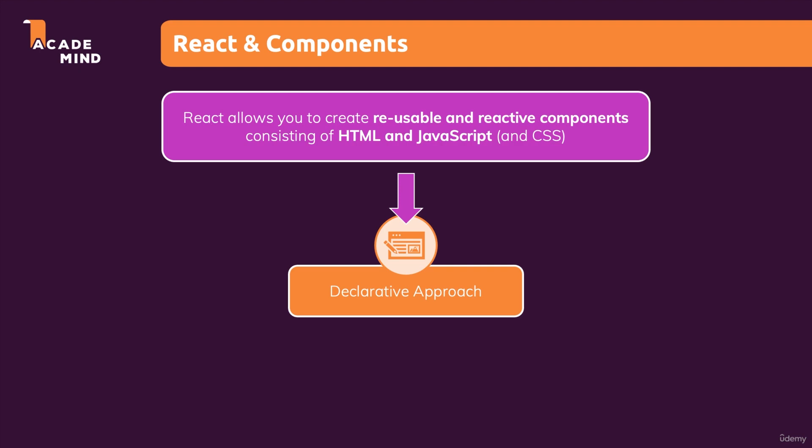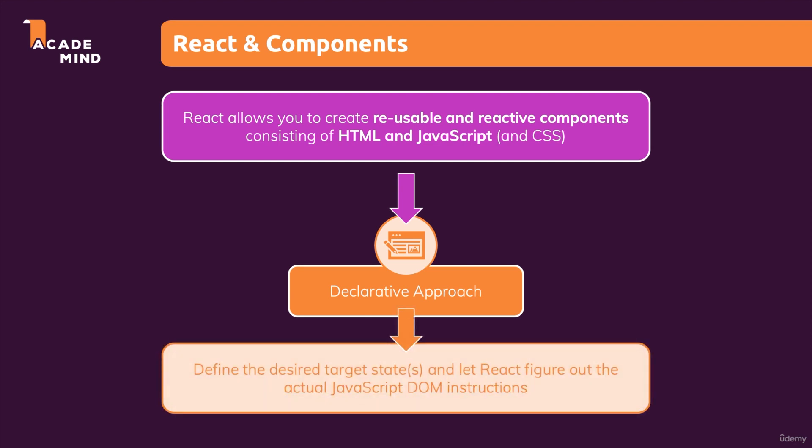Instead, with React — and that's really important — you will always define the desired end state, the target state, or possibly also different target states depending on different conditions. It's then React's job to figure out which elements on the actual web page might need to be added, removed, or updated. You don't write these concrete DOM updating instructions on your own as you would with just JavaScript. Instead, with React components, you just define these end states and under which conditions which state should be used.